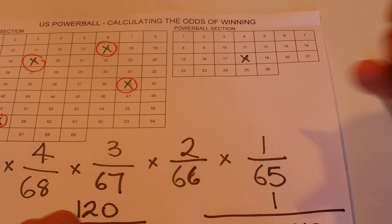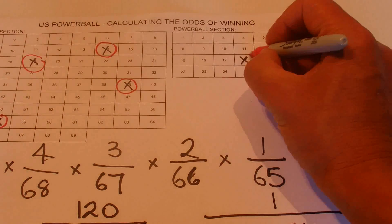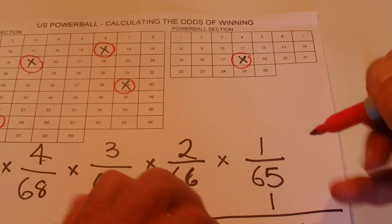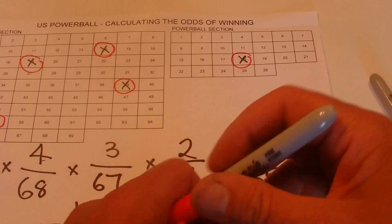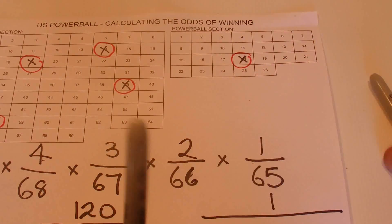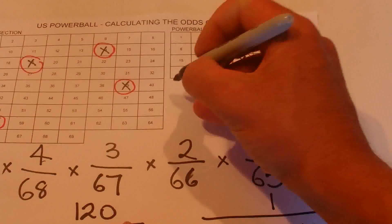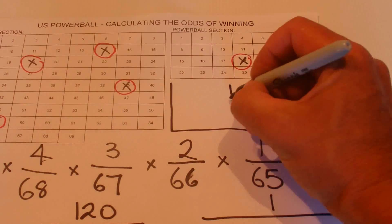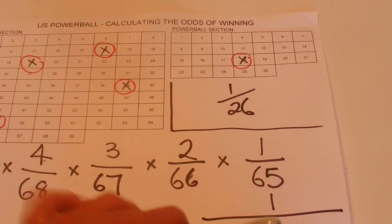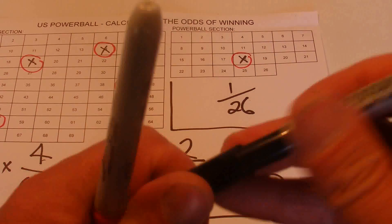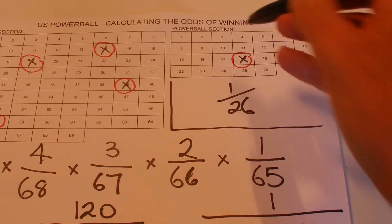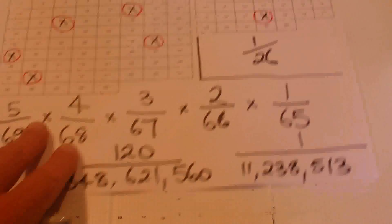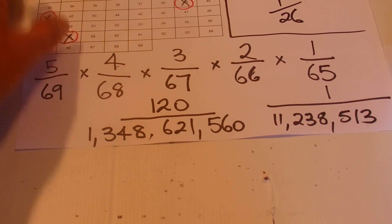But you've still got to match the one ball in 26 to get the Powerball section. So that's one chance in 26 of getting the Powerball.